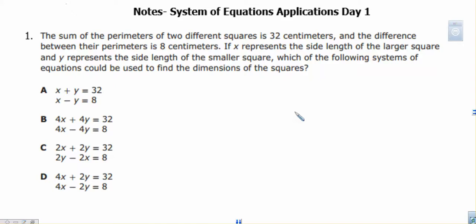Systems of equations applications day one. Number one: the sum of the perimeters of two different squares is 32 centimeters, and the difference between their perimeters is 8 centimeters. If x is the side of the larger square and y is the side of the smaller square, which of the following systems could be used to find the dimensions of the squares?